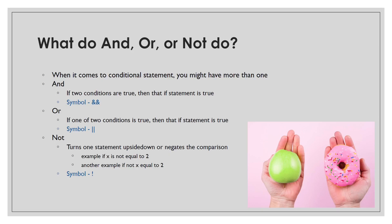OR is basically: if one of the two conditions is true, or both of them, then the statement is true. The only criteria to make the whole if statement true is just one of the conditions to be true. For example: I could go outside if I eat either an apple OR a doughnut — if I ate just the apple and not the doughnut, I could still go outside.